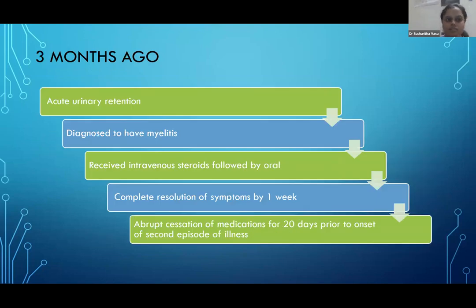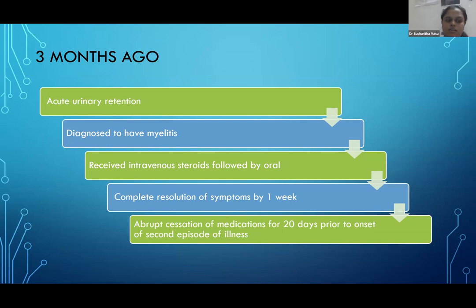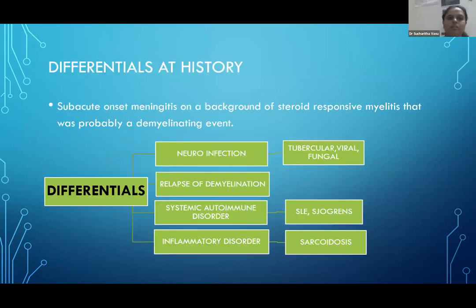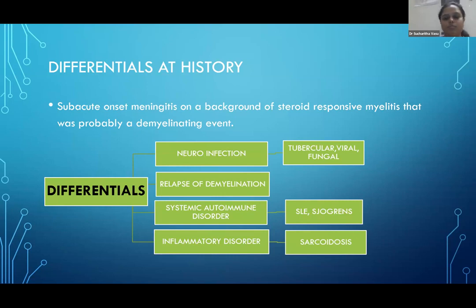Reviewing her significant past history: three months ago she had acute urinary retention with no girdle-like sensation, no back pain, and no weakness of lower limbs. She was diagnosed with myelitis and received intravenous steroids followed by oral steroids, with complete resolution within one week. She was on tapering steroids for the next two months but stopped all medications 20 days before the onset of this second episode. Personal history revealed decreased appetite, regular menstrual history, lactational amenorrhea, and no history of abortions. Revised differential: subacute onset meningitis on a background of steroid-responsive myelitis — probably a demyelinating event — with high possibility of relapse of demyelination alongside neuroinfection and systemic autoimmune disorder.